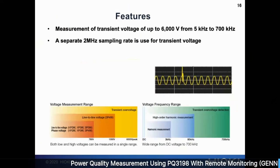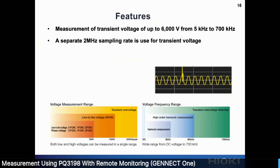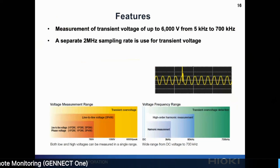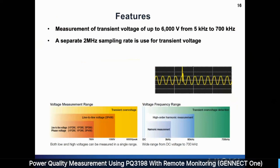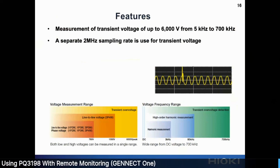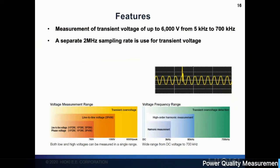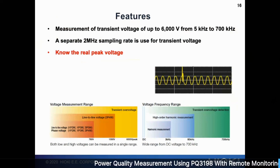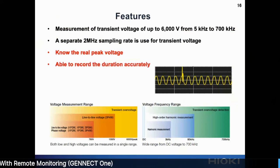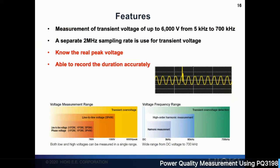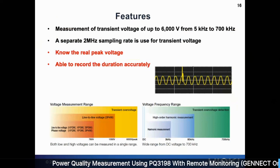Another very strong feature is transient voltage measurement. It can measure up to 6,000 volts V-peak, from 5 kHz to 700 kHz, with a sampling speed of 2 MHz. This is one of the highest sampling speeds available — comparing Apple to Apple with other PQA competitors, this is the highest you can find in the market. With high sampling speed, you can pick up very accurate peak voltage and duration of the transient.